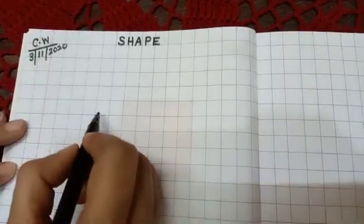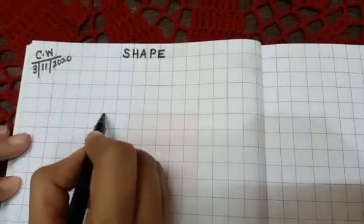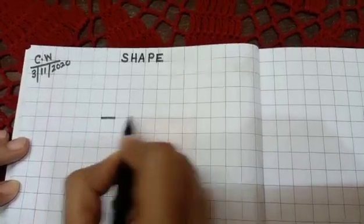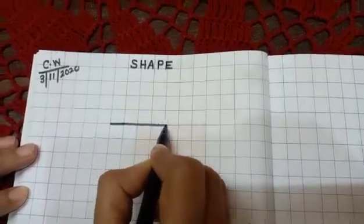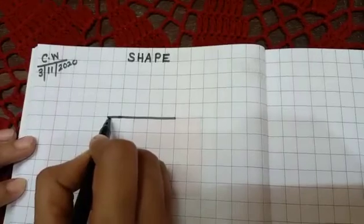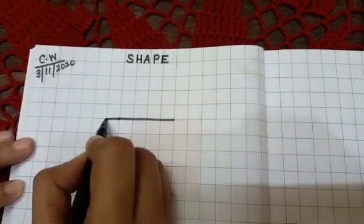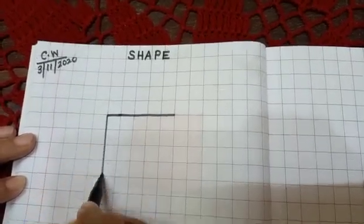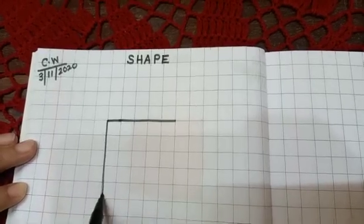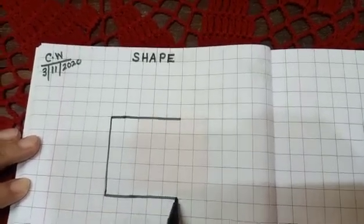So here I am drawing square. Square has four sides: one, two, three, four.